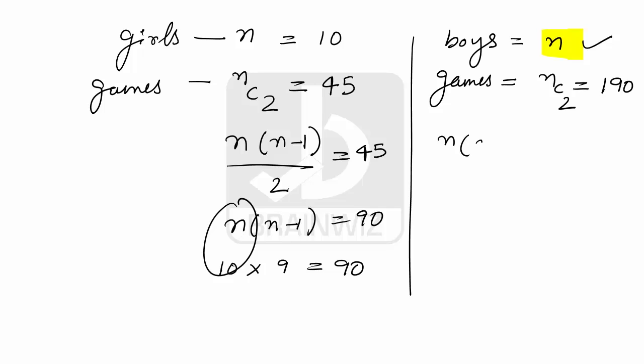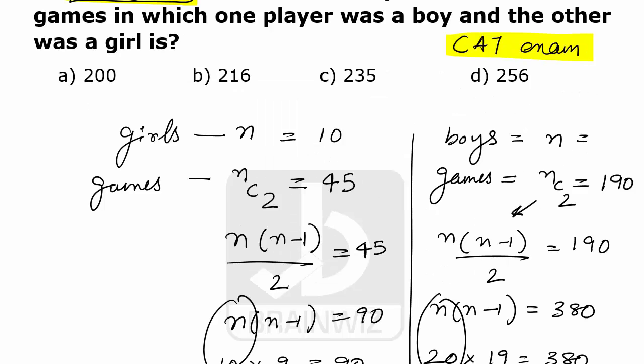That is n into n minus 1 by 2 makes 190. I hope you have understood this. And n into n minus 1 equals 380. Now here we can say 20 into 19 makes 380. So n stands for 20. The number of boys are 20.